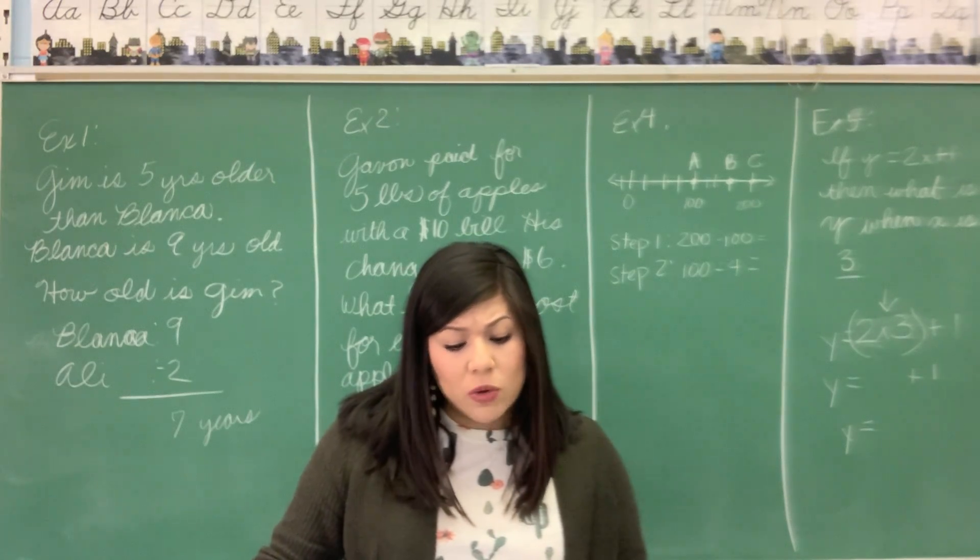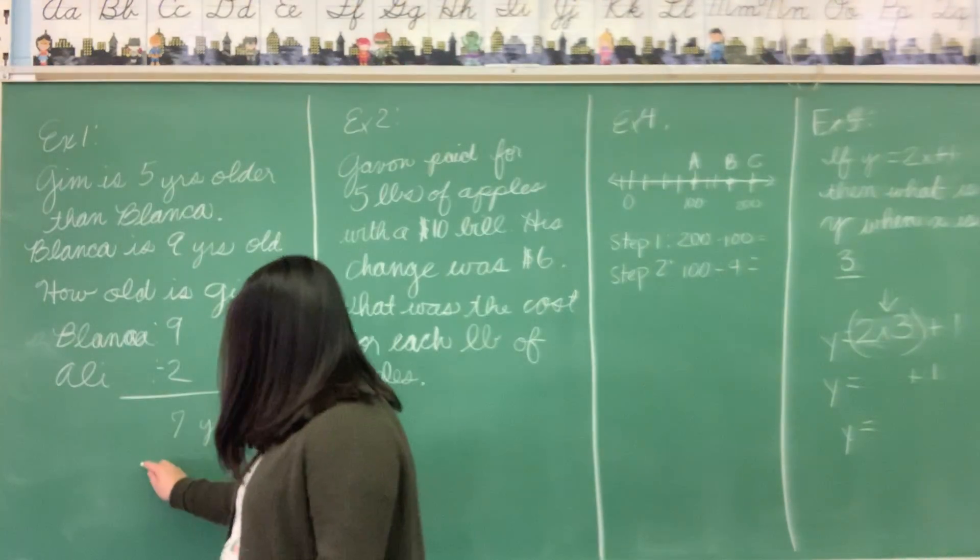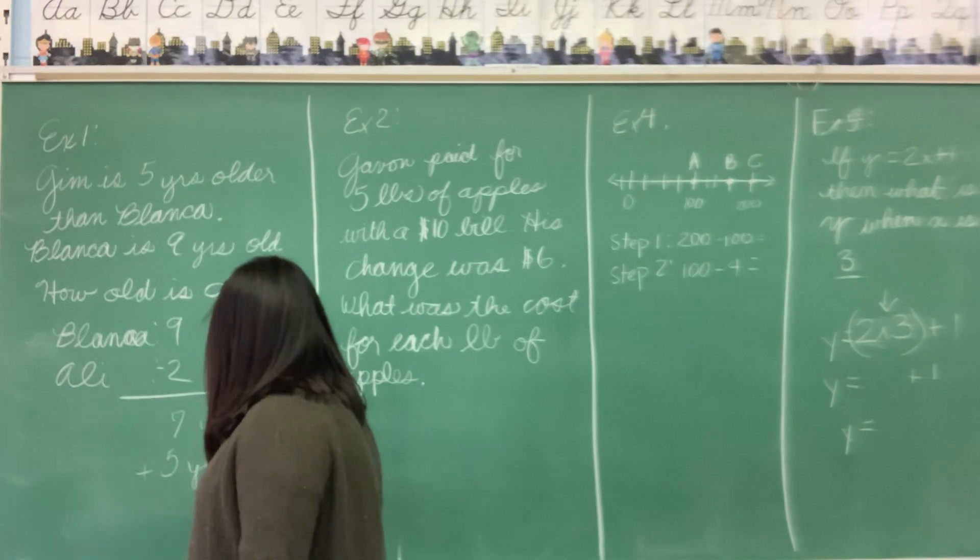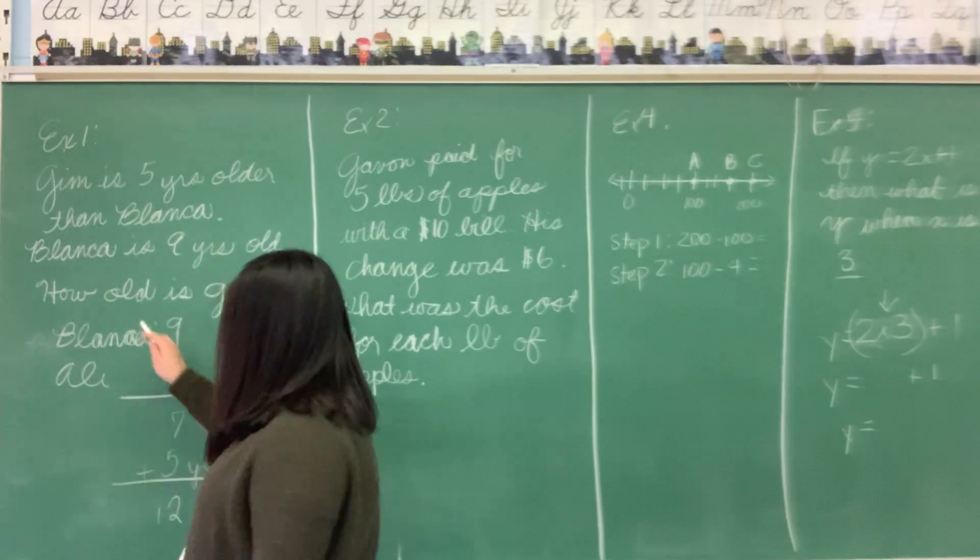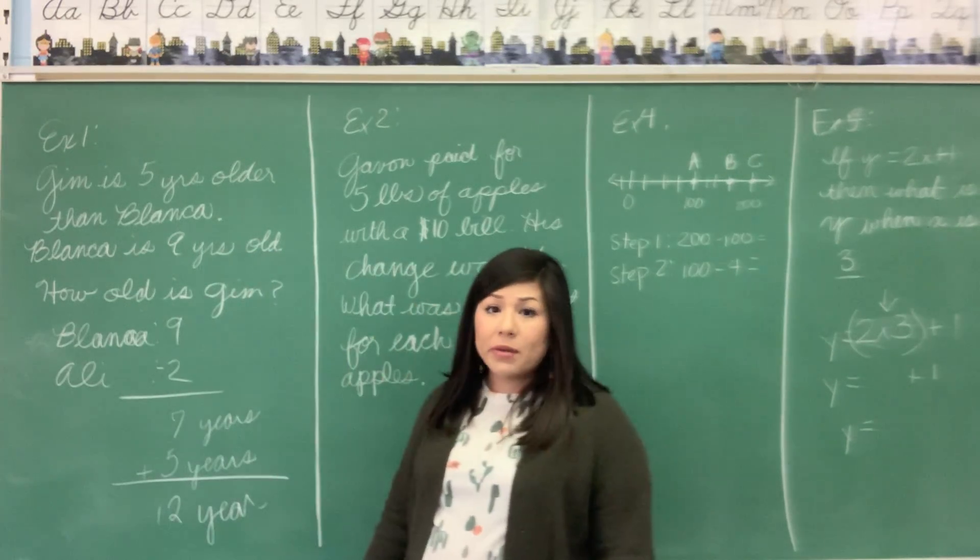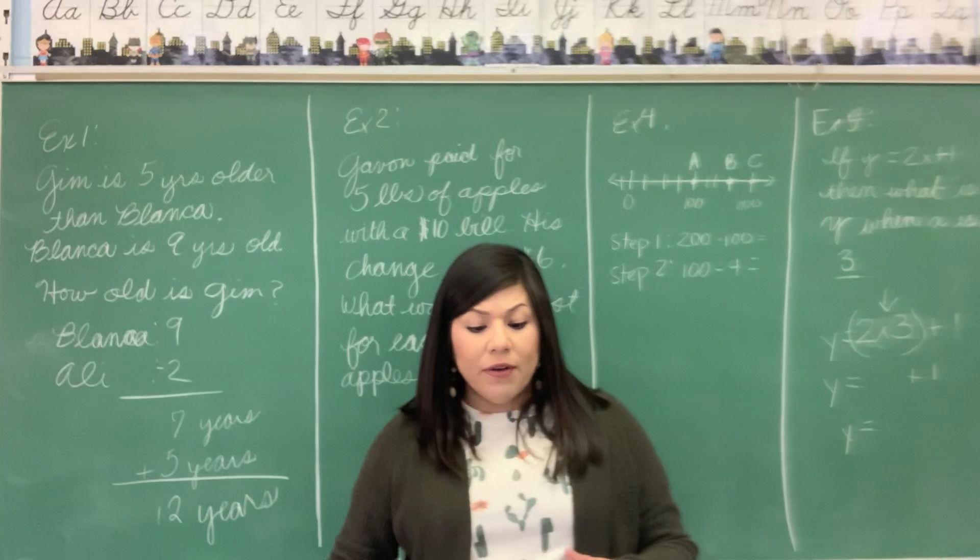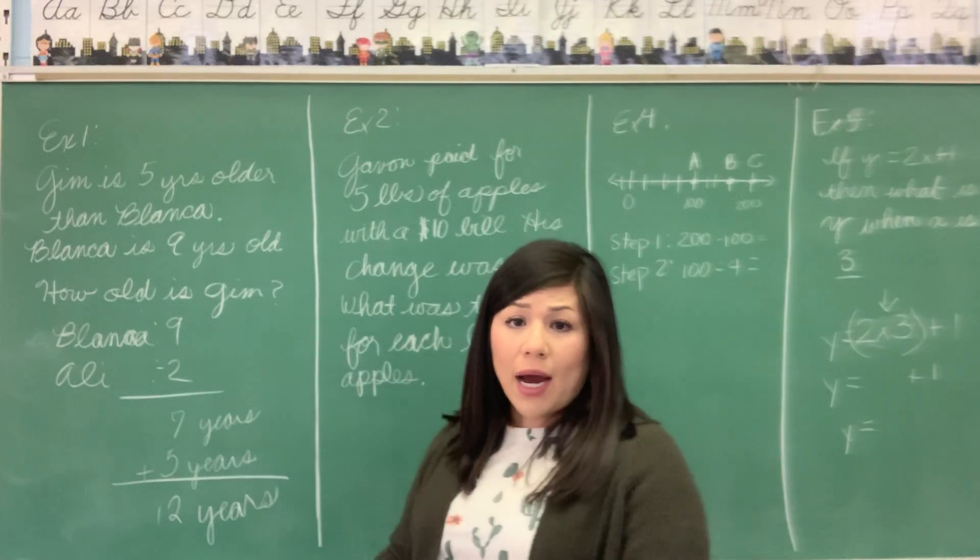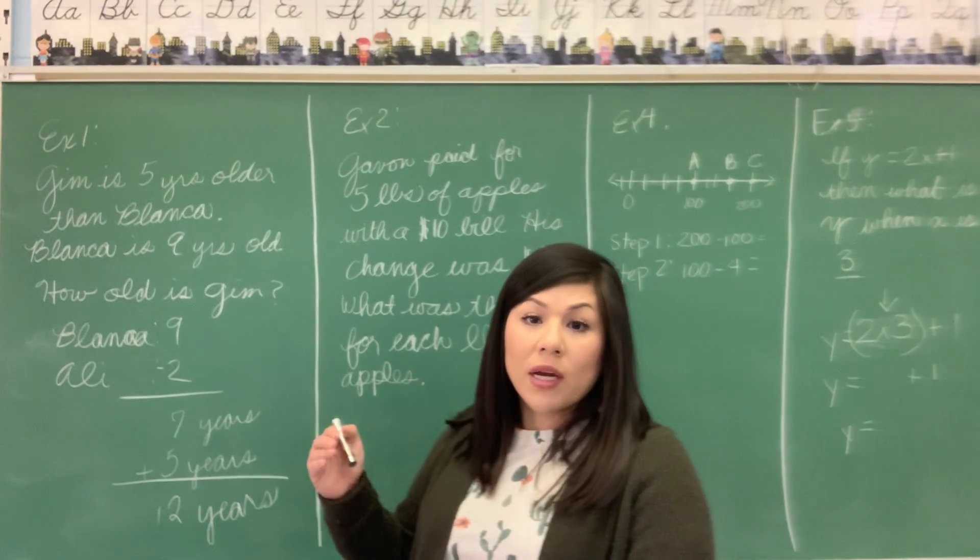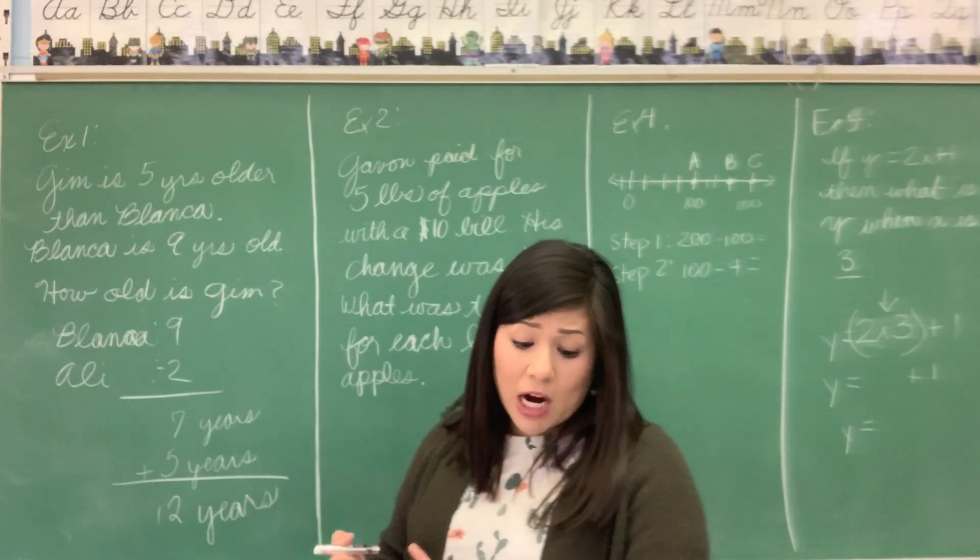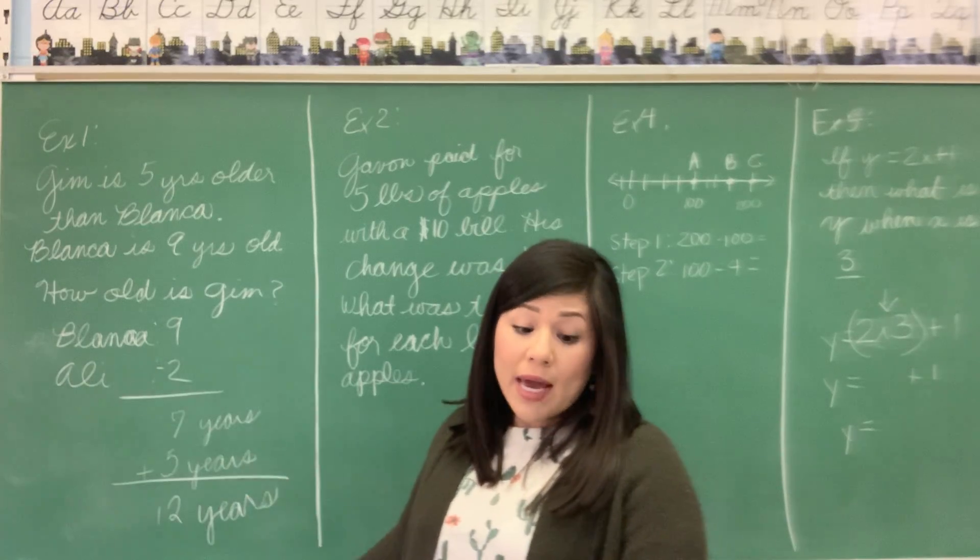And then we're going to try to find out what Jim is. Jim is five years older than Allie. So we're going to do seven plus five years. Seven plus five is 12. So the question was asking you how old is Jim? Did you see how we came up with the answer? He's 12 years old. That makes him a 12-year-old boy.